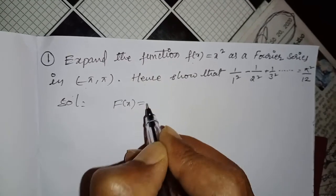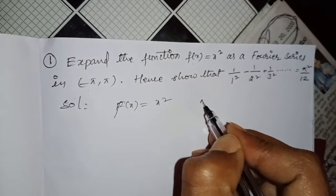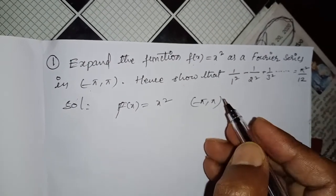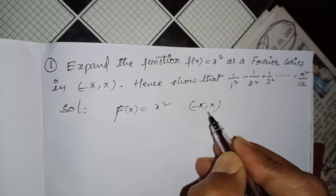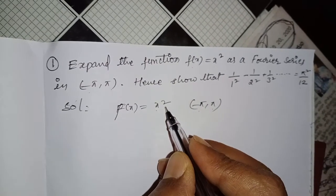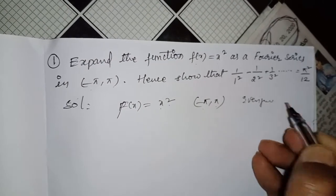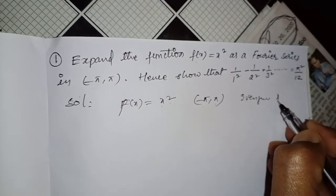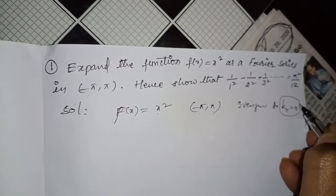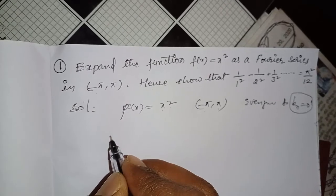f(x) = x². The limits are -π to +π. Here the limits are negative to positive. Since f(x) = x² is an even function, bn = 0. We only need to find a0 and an.